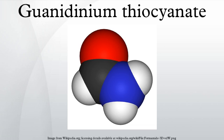Guanidinium thiocyanate is also used to lyse cells and virus particles in RNA and DNA extractions, where its function, in addition to its lysing action, is to prevent activity of RNase enzymes and DNase enzymes by denaturing them. These enzymes would otherwise damage the extract.